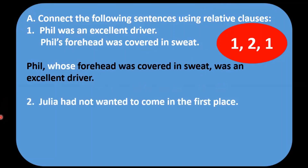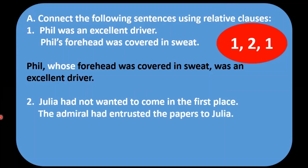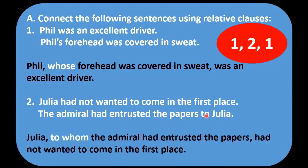Applying the same formula: Julia had not wanted to come in the first place. The admirer had entrusted the papers to Julia. Julia is the subject — write comma. Julia appears at the end of the second sentence in the object position, so it is whom. But notice there is the preposition 'to' in front, so the relative clause is 'to whom.' Answer: Julia, to whom the admirer had entrusted the papers, had not wanted to come in the first place. One important note: if the subject appears in the object position and there is a preposition, start your relative clause with that preposition.